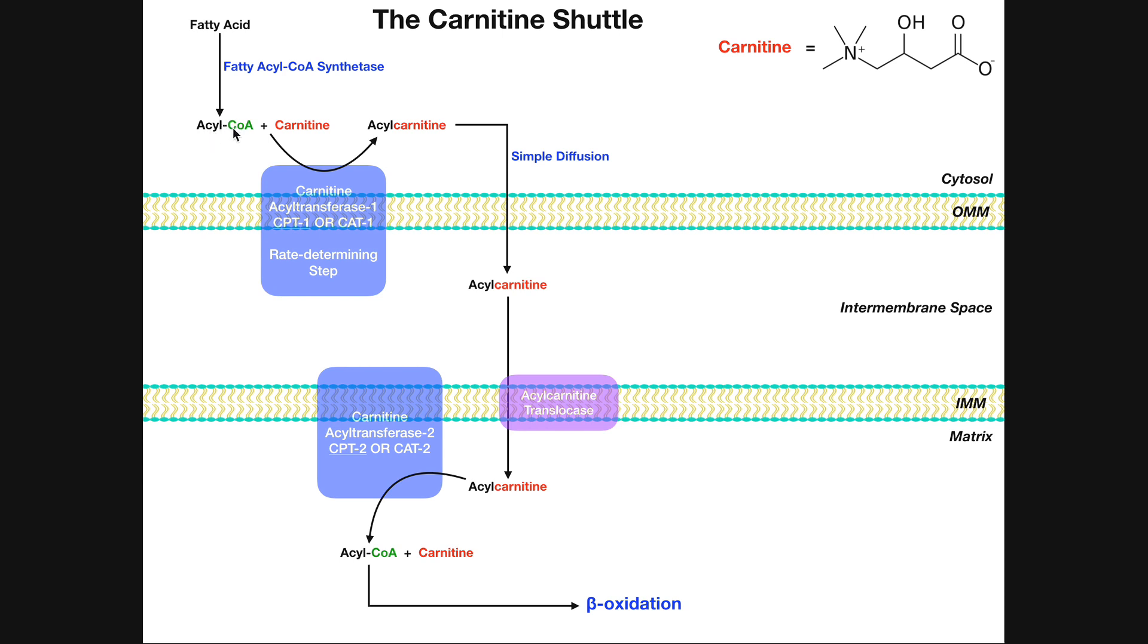Getting this acyl-CoA from the cytoplasm into the matrix of the mitochondria is easier said than done, because the mitochondria all have two membranes. They have an outer mitochondrial membrane, or OMM, and they have an inner mitochondrial membrane, IMM, and then a space between the two membranes called the intermembrane space. So somehow you're going to have to get this acyl-CoA from the cytoplasm across the OMM, through the intermembrane space, through the inner membrane, and then ultimately into the matrix.